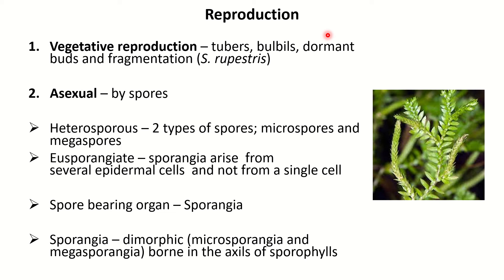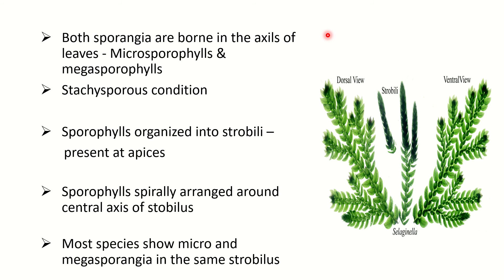The spore-bearing organ is called the sporangium (plural: sporangia). Sporangia are dimorphic — megasporangia and microsporangia — both of which are borne in the axils of sporophylls: megasporophylls bear megasporangia, and microsporophylls bear microsporangia.